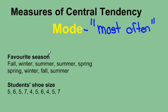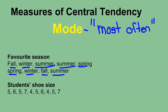Let's look at this example — it's favorite season. These aren't numbers; we're looking for the one that occurs most often, like someone took a survey asking what your favorite season was. I have two falls, two winters, two springs, and three summers. So the one that occurs most often is summer, since there's three. The mode of this data would be summer.